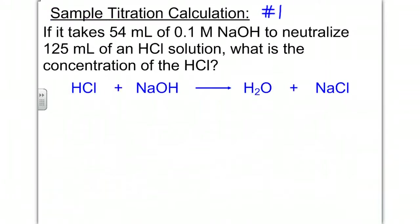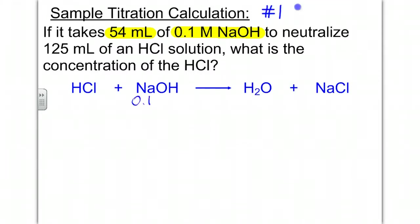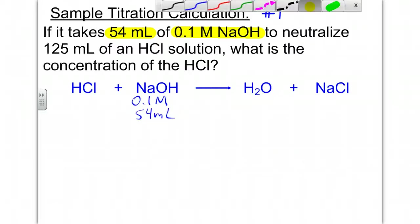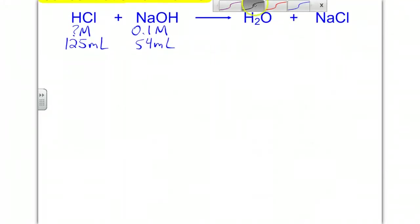Now we're going to look at how to perform the calculation. Here's sample calculation number one. We're given 54 milliliters of a 0.1 molar sodium hydroxide solution. Using the balanced equation, sodium hydroxide is 0.1 molar and 54 milliliters. We also have 125 milliliters of hydrochloric acid, and the question is: what is the concentration of the hydrochloric acid? Sodium hydroxide is our known concentration and hydrochloric acid is our unknown concentration.